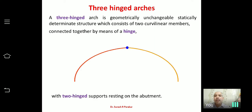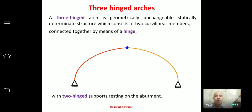The arch has two hinged supports on the abutments — abutment means the lowermost part and crown means the uppermost part. We have one support at the left end and another at the right end. So we are now clear: two curvilinear members connected at the crown by an internal hinge, and two hinged supports at the abutments on left and right — this is a three-hinged arch.